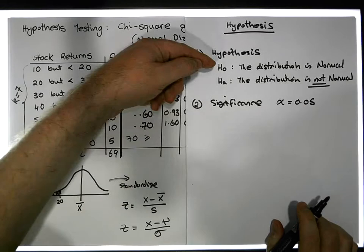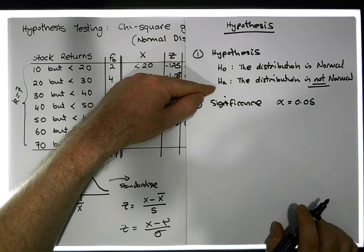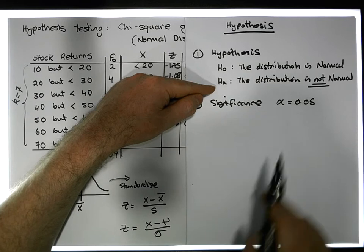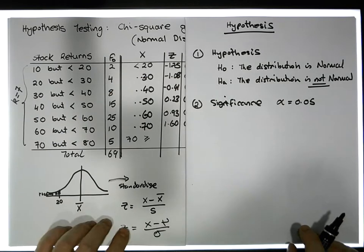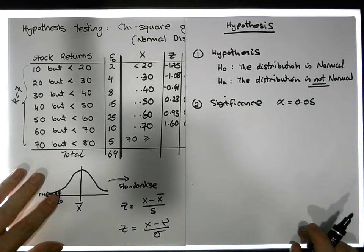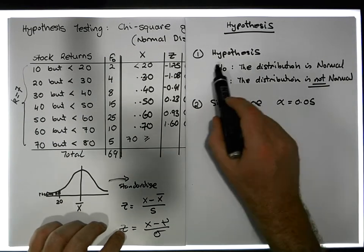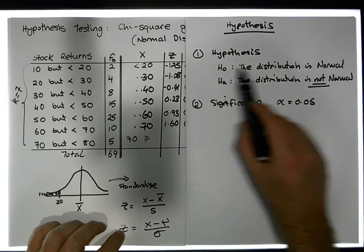If I do reject the null hypothesis, I'll only do it incorrectly 5% of the time. That's a basic way of saying it's the probability of incorrectly rejecting the null hypothesis when the null hypothesis is actually true.